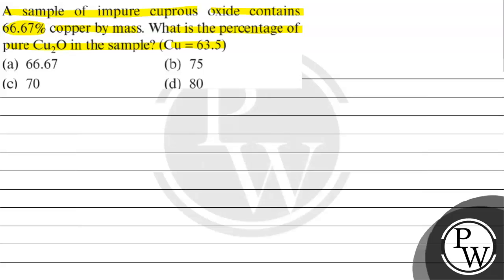Copper atomic mass is basically equals to 63.5. Option A has 66.67. Option B has 75. Option C has 70. Option D is 80.